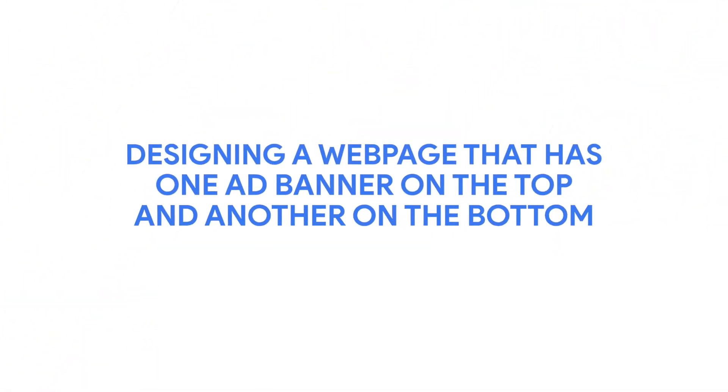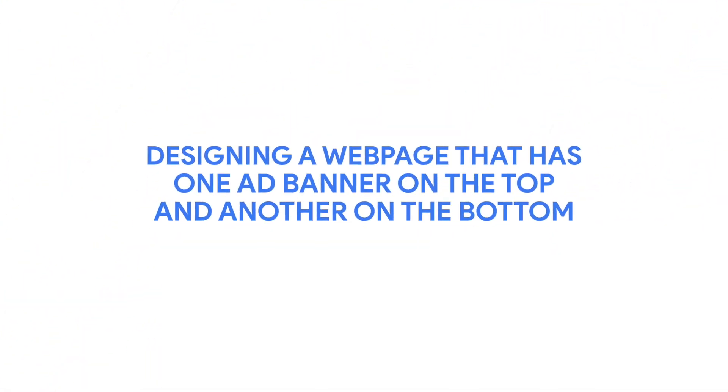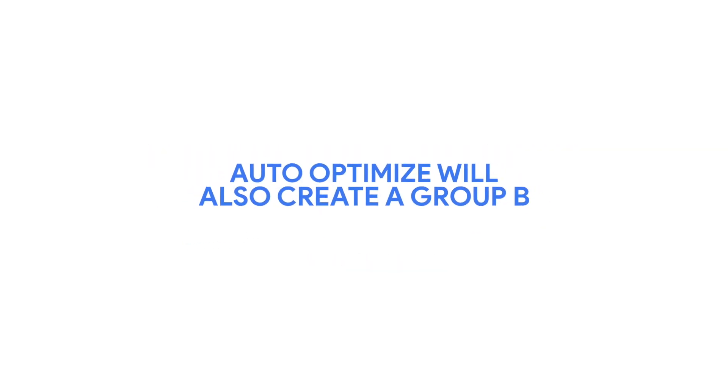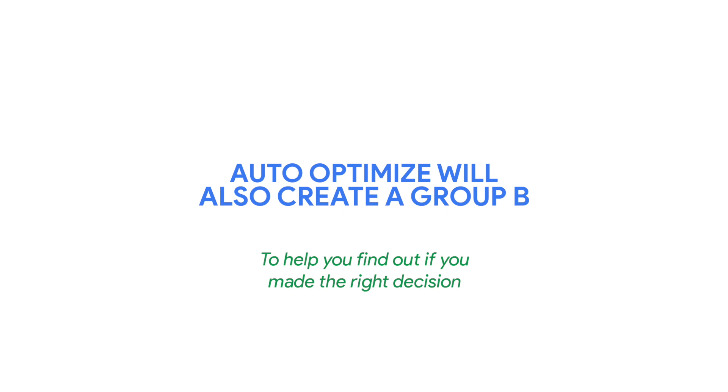In terms of ad placement, ad size, and ad content. For example, if you design your webpage so that it has one ad banner on the top and another on the bottom, that's your A group. And auto-optimize will also create a B group to help you find out if you made the right decision. It'll show some of your users an extra ad banner on the side, for example, and see which settings are better for your user experience and your ad revenue.